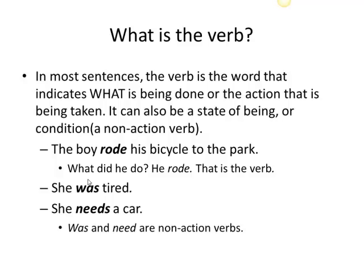In the first example, again the boy — the verb is 'rode.' What did he do? He rode his bicycle to the park. In the next example, 'she was tired' — this is a non-action but it is a condition. Or 'she needs a car' — this is also a non-action but it is the verb of the sentence.